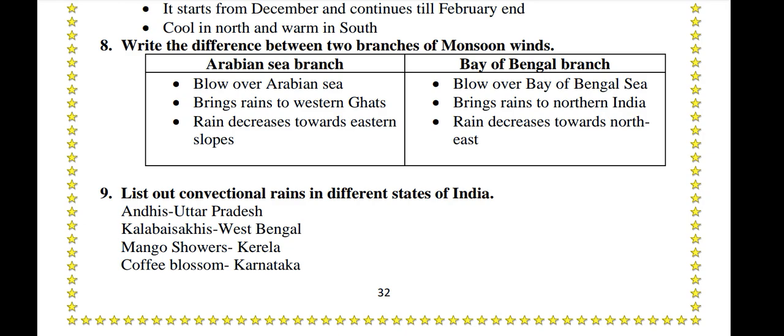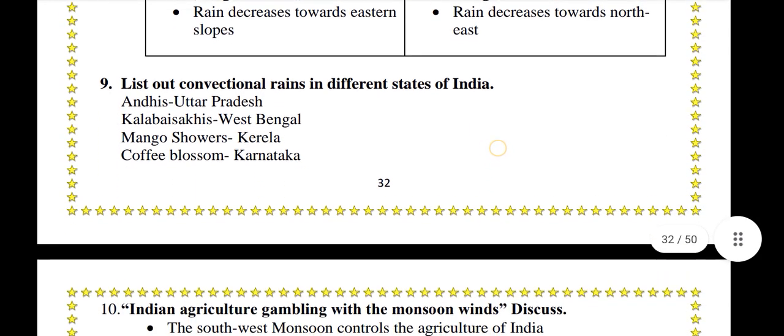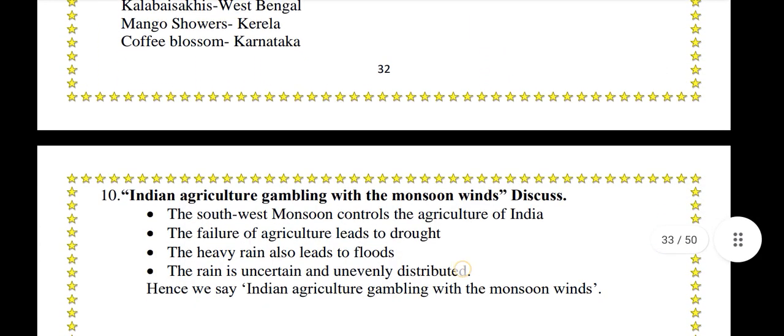List out conventional rains in different states of India. Andhra Pradesh and Uttar Pradesh: local convectional rains. West Bengal: Kalabaisakhi. Kerala: Mango showers. Karnataka: Coffee Blossom.